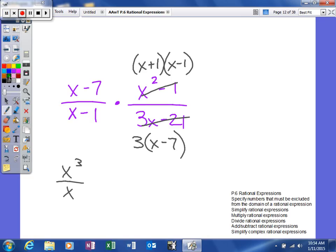Looking at this, now we can simplify. We're looking for any numerator with any denominator that shares a common factor. In this numerator, you see x-7 and x-7. Here, x-1 and x-1. Multiply your numerators together: 1 times (x+1) times 1 is (x+1) over 1 times 3 times 1, which gives us 3. So the simplified form is (x+1)/3.